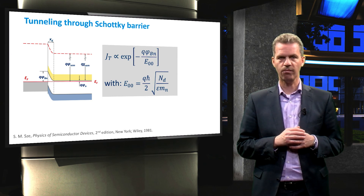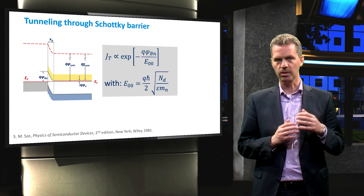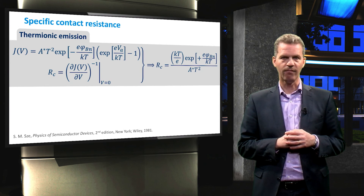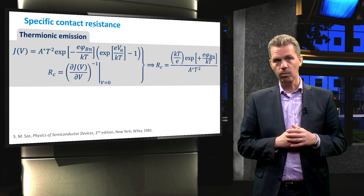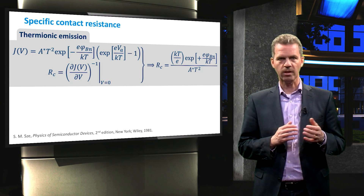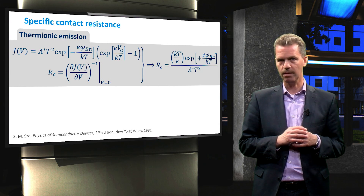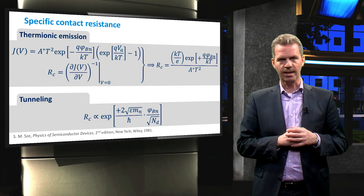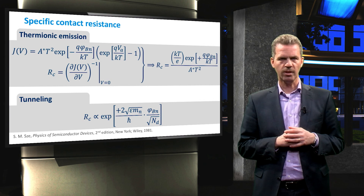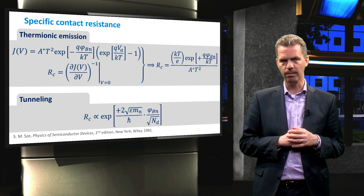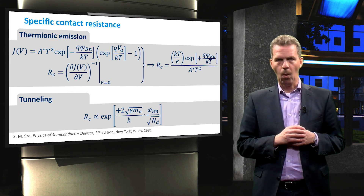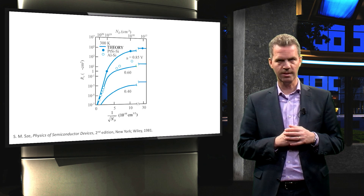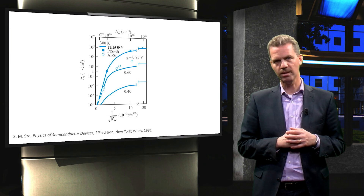For solar cell applications, we are often interested in the specific contact resistance between the semiconductor and the metal. This is defined as the inverse of the derivative of the current-voltage relationship evaluated at zero bias. We can work this out for both the thermionic emission regime and the tunneling-dominated regime. In the latter case, we see clearly that increasing the doping concentration in the semiconductor can mitigate the effect of the Schottky barrier height phi_BN. Plotting the specific contact resistance confirms a clear drop in resistance with increasing doping concentration. We will see in later videos how this is implemented in solar cells.